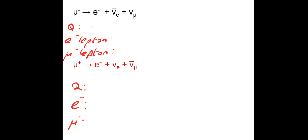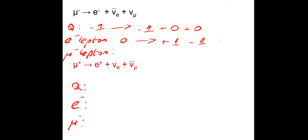For the first interaction — muon decay — checking charge: the mu-minus has minus 1 charge; the electron has minus 1 charge; the neutrinos have zero charge — that's satisfied. Electron lepton number: the muon has 0; the electron has plus 1; the anti-electron neutrino has minus 1; the muon neutrino has electron lepton number of 0 — satisfied. Muon lepton number: the mu-minus has plus 1; both the electrons have muon number 0; the muon neutrino has muon lepton number of plus 1 — plus 1 on both sides, so all three are satisfied.